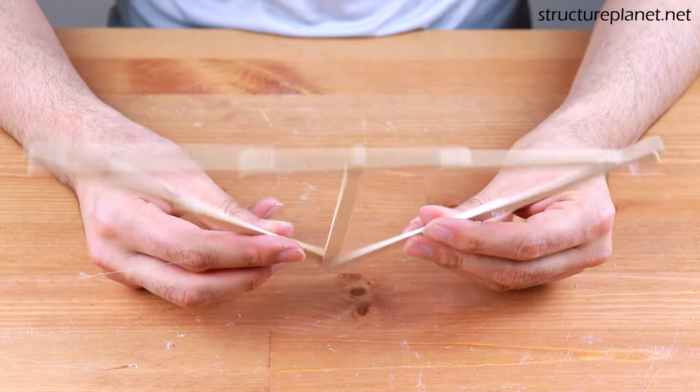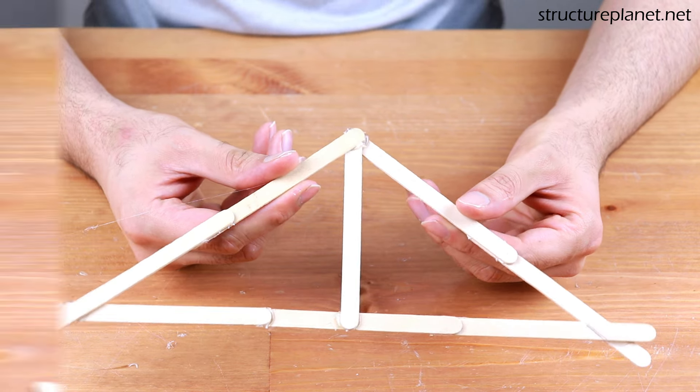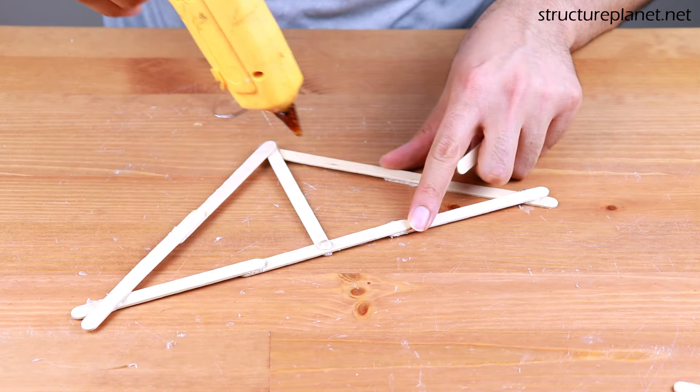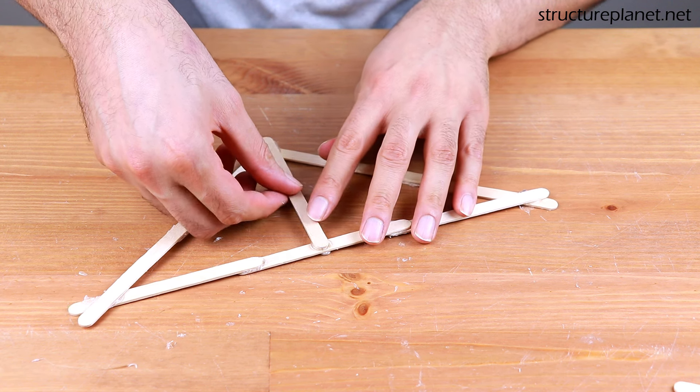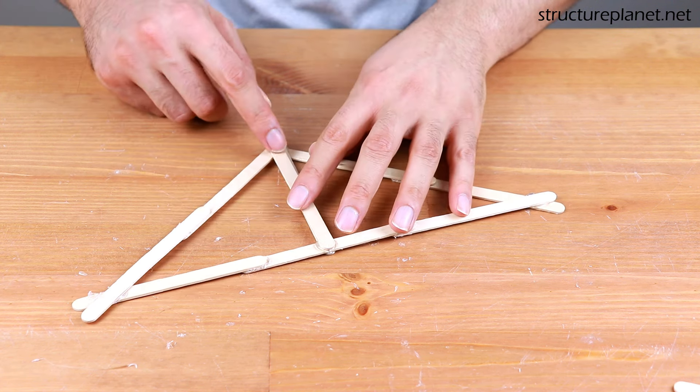So we just completed the first layer of the sticks, we will now add the second layer to have a stronger bridge. You can skip the second layer if you want a bridge with only 34 sticks. Let's continue.